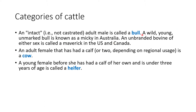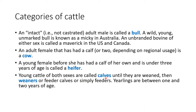So the three key terms to remember are bull, cow, and heifer. The young cattle of both sexes are called calves until they are weaned — weaned means they are taken off milk. Once off their mother's milk, they are called weaners or feeder calves. A weaner should be between one and two years of age.